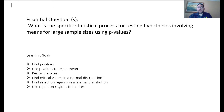The learning goals are to find p-values, use p-values to test a mean, perform a Z-test, find critical values in a normal distribution, find rejection regions, and use rejection regions for a Z-test. We're going to focus on the p-value method. Then later in the next part, we're going to talk about how to do rejection regions and critical values.